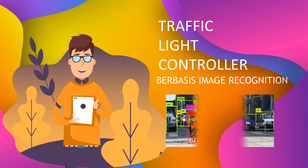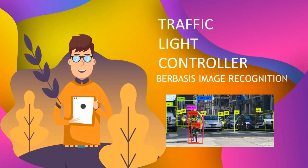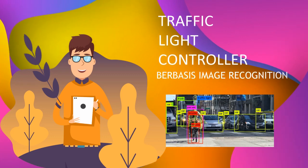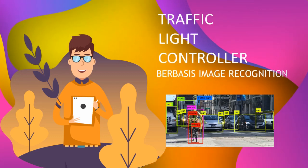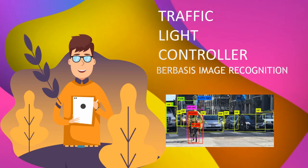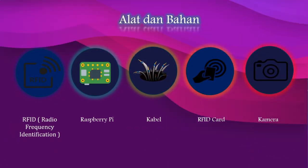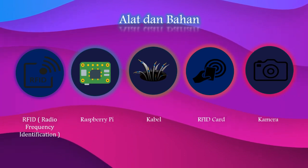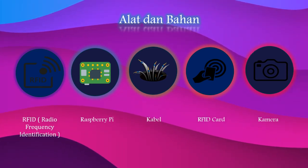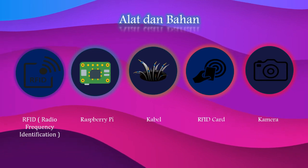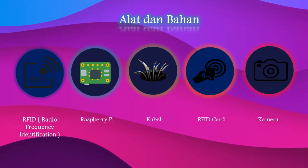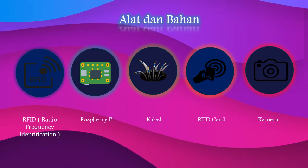Traffic Light Controller merupakan solusi dari kemacetan yang ada di persimpangan, khususnya membantu ambulan untuk melancarkan mobilitasnya. Bahan yang dibutuhkan: pertama, RFID atau Radio Frequency Identification; kedua, Raspberry Pi; ketiga, kabel; keempat, RFID Card; dan kelima, kamera.